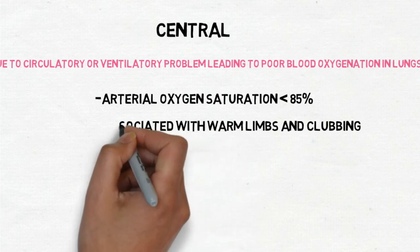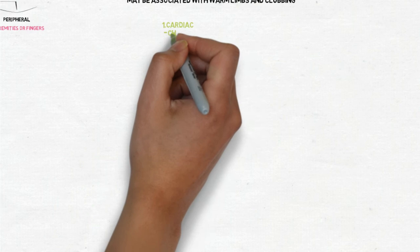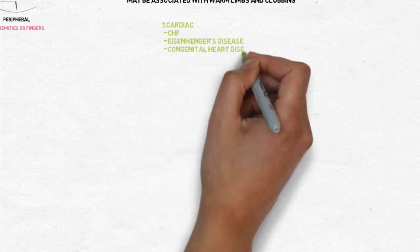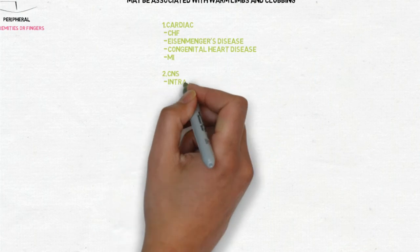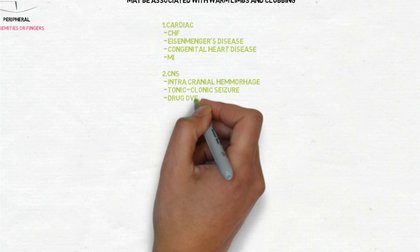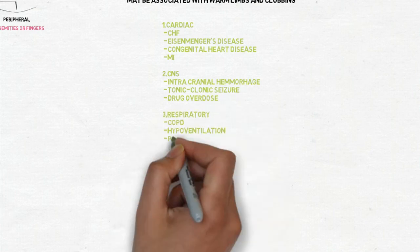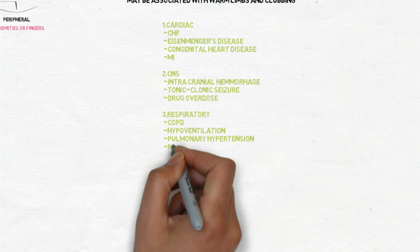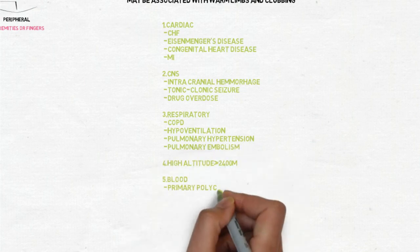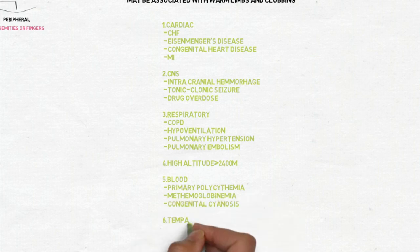Another feature of central cyanosis: it is associated with warm limbs and clubbing. What are the causes? There are various types of causes like cardiac causes: congestive heart failure, Eisenmenger's disease, congenital heart disease, and myocardial infarction.